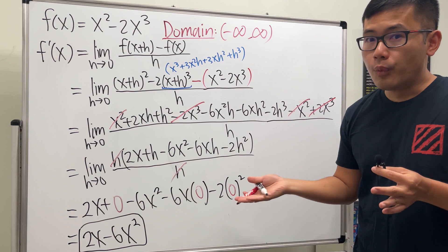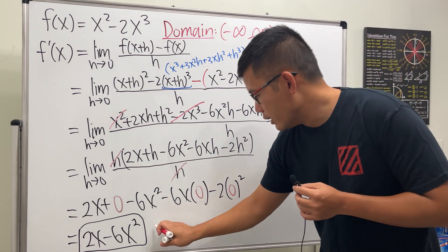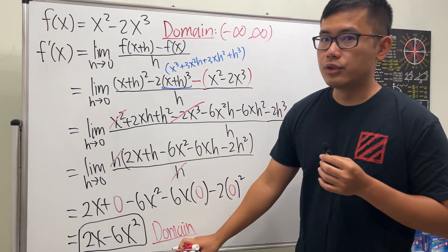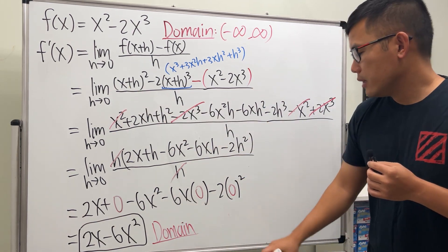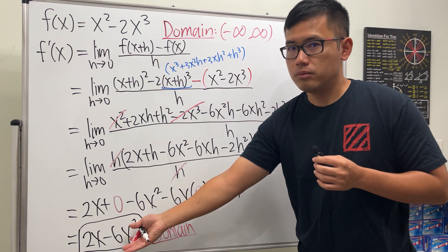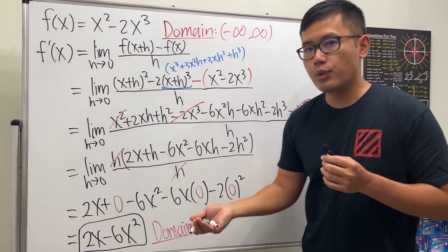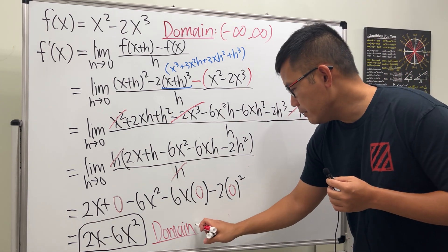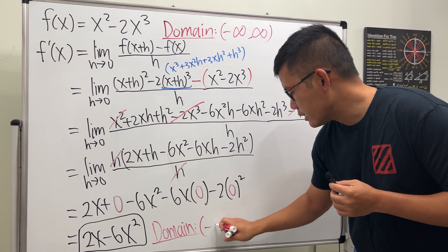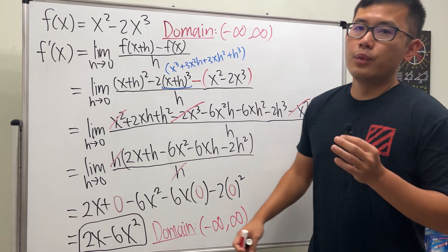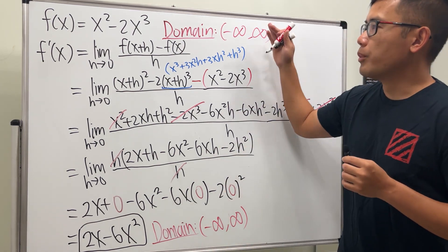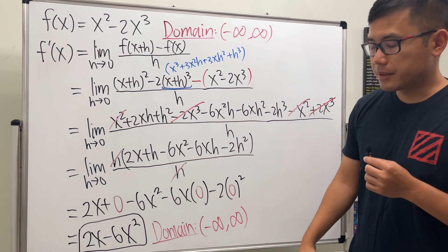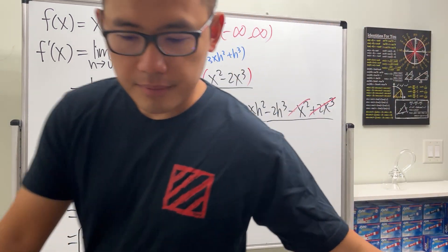We also have to find the domain for f prime. There's no restriction — no x on the bottom, no square root with x inside, no logarithm — so the domain is also negative infinity to positive infinity. We have to be careful though, because sometimes the domain of the function and the domain of the derivative might be different, so always double check.